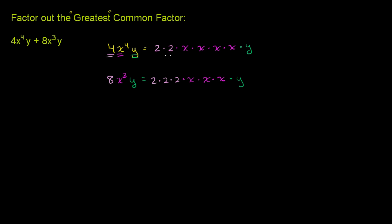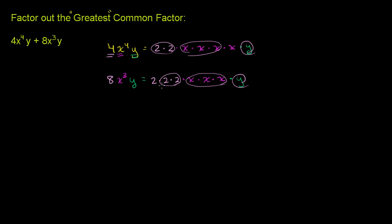So what factors are common to both of these? We want to include as many as possible to find the greatest common factor. We have two 2's in the first and three 2's in the second, so we only have two 2's in common. We have 4 x's here but only 3 x's here, so we only have 3 x's in common. We have a y in both. So the greatest common factor is 2 times 2 times x times x times x times y — or 4x to the third y.